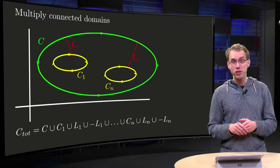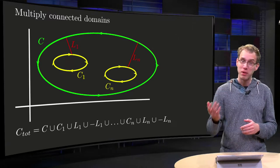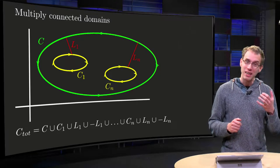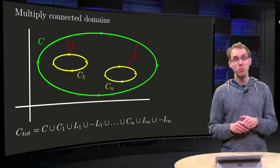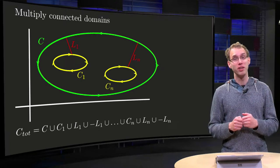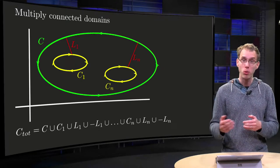That happens for example when we make holes around singularities, in order to make f analytic in the remaining part of our domain. In that case we have a so-called multiply connected domain, our contour integral will then be the sum of the contour integrals around the holes.